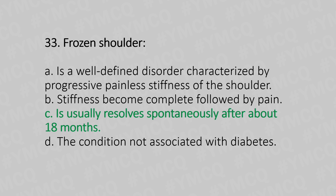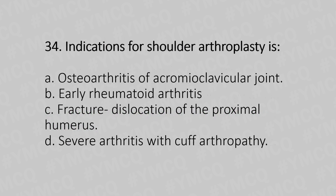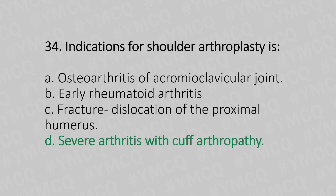Now let's move to question number 34. Indication of shoulder arthroplasty is: Option A, osteoarthritis of the acromioclavicular joint. Option B, early rheumatoid arthritis. Option C, fracture dislocation of the proximal humerus. Option D, severe arthritis with cuff arthroplasty. And the answer is Option D, severe arthritis with cuff arthroplasty.